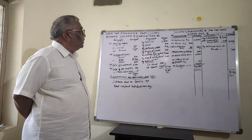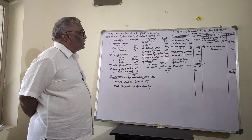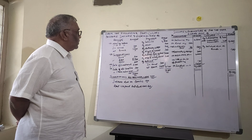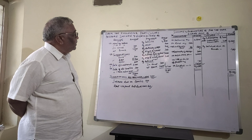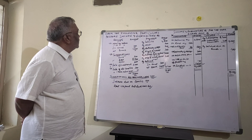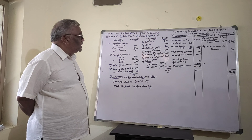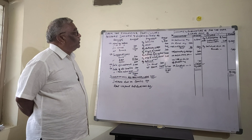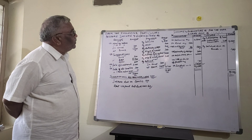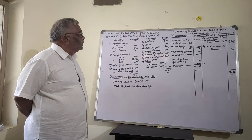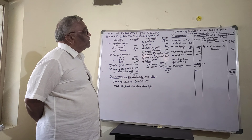Dear students, this is the second sum on not-for-profit organization's law. In this sum, we are given a receipts and payments account, and from this receipts and payments account, we are going to prepare an income and expenditure account. The particulars relate to the year 2020, so we are preparing the income and expenditure account for the year ending 2020 for the sports club.